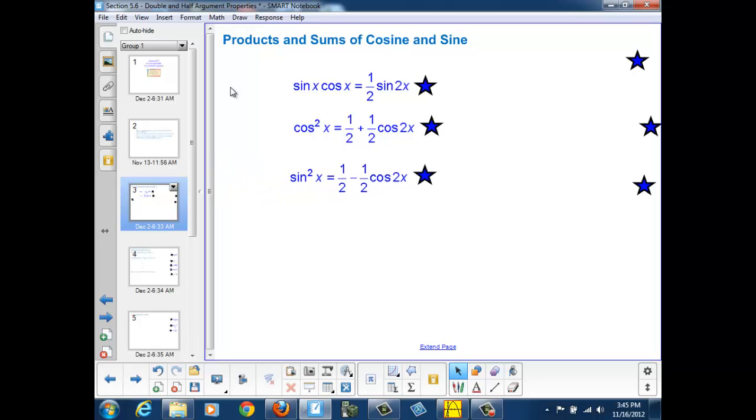And finally, our sine squared of x can be written as 1 half minus 1 half cosine 2x.